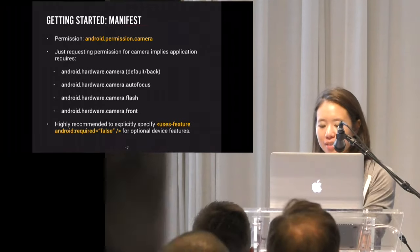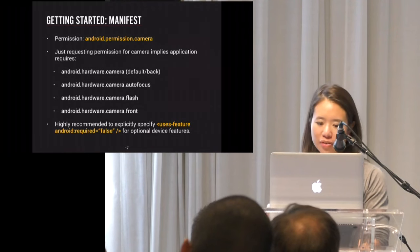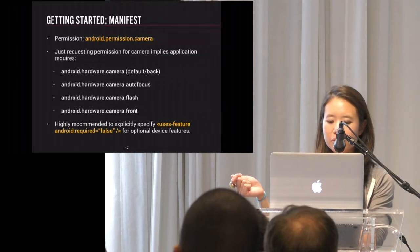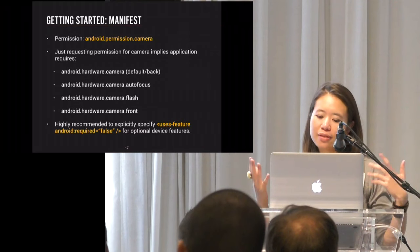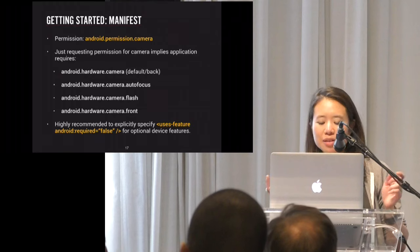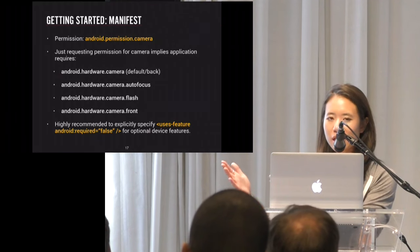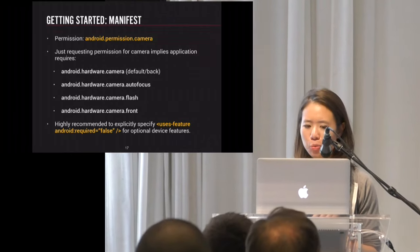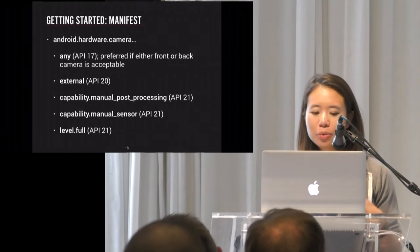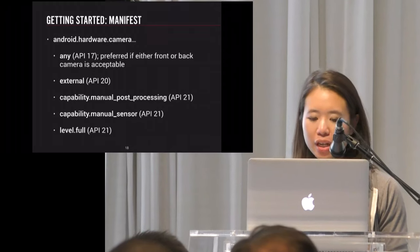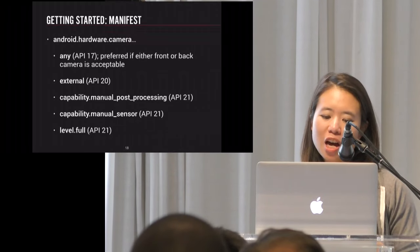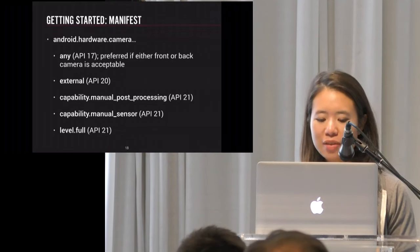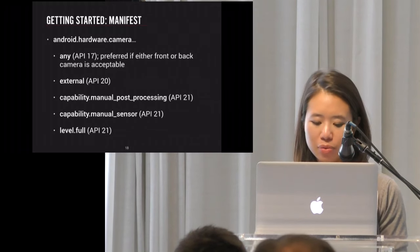A couple more things about the manifest: if you've done Camera 1 before, you know you have to ask permission for the camera. Just asking camera permission basically requires your users to have a back camera, front camera, autofocus, and flash. Documentation highly recommends using the uses-features tag and marking some features as optional so you don't inadvertently filter out more of your user base than you need to. There are also tags for specifying that your device should support external cameras, and some fun new things from Lollipop like manual controls and supported hardware level.